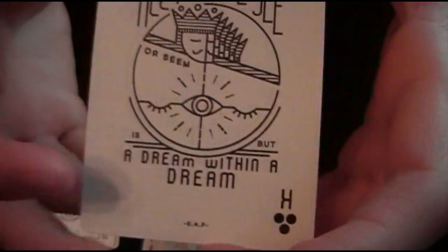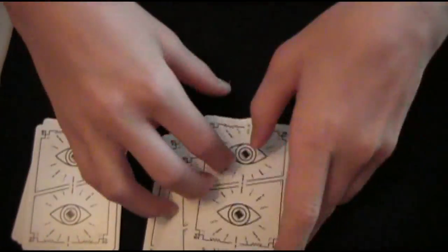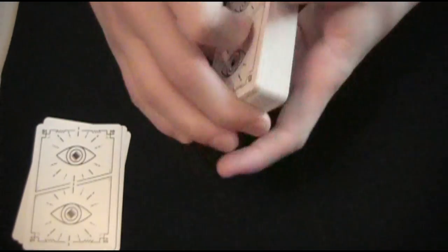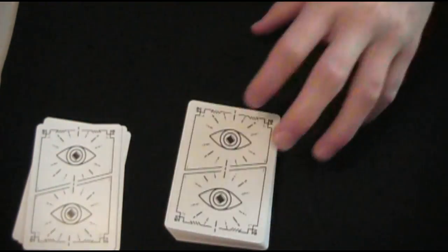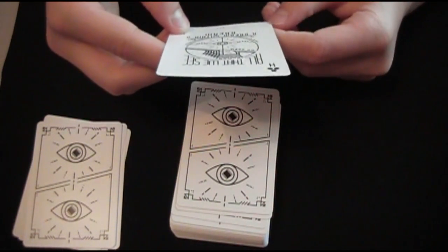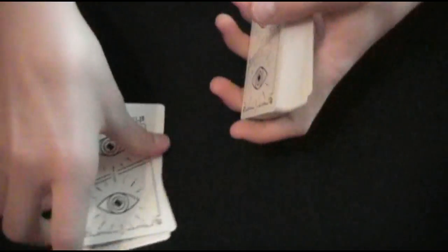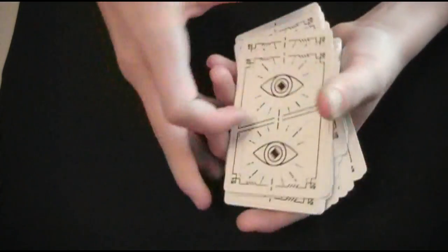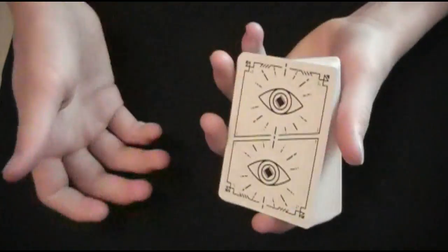So if you ever want to creep somebody out, just go up to them and say anything that's on here. Like if you showed up at your friend's door and the first thing you said was like, All that we see, or seem, is but a dream, within a dream. You'd probably not have a friend anymore. But that's depending on whether your friends are loyal or don't care if you're weird or not.